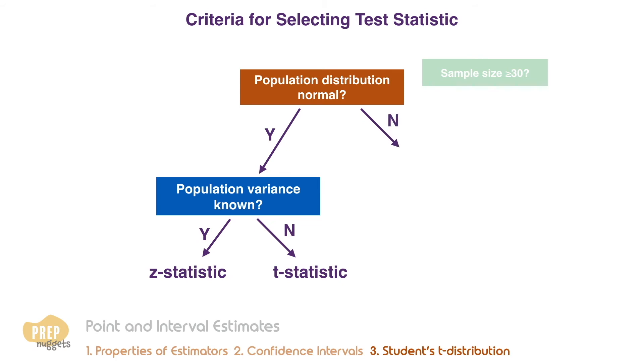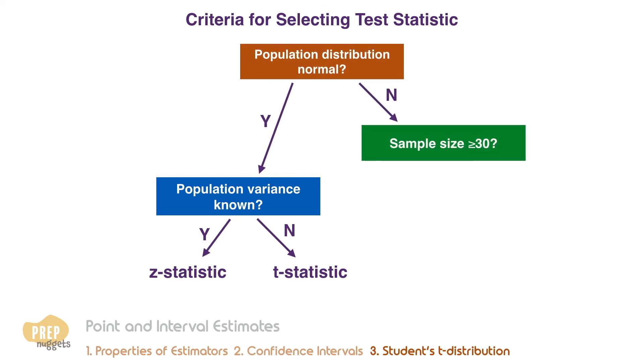If the population is not normal, or if you simply do not know, check if the sample size is at least 30. If it's less than 30, the problem cannot be solved as the central limit theorem cannot be applied. If it is at least 30, central limit theorem can be applied and we can determine whether to use the Z or T statistic based on whether the population variance is known.